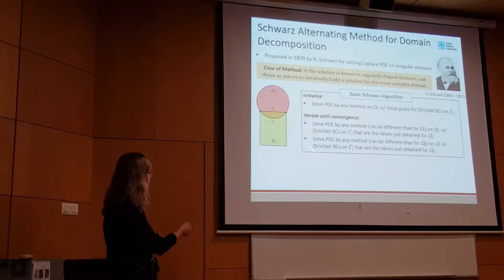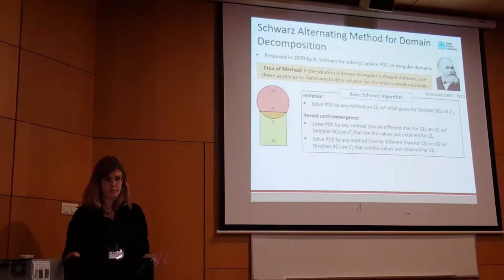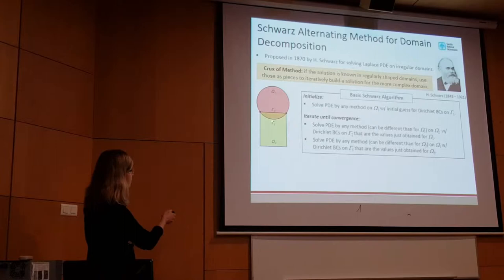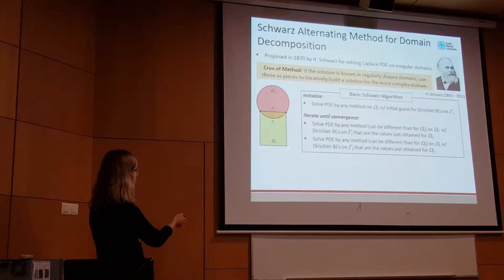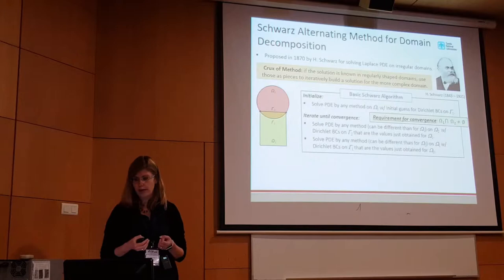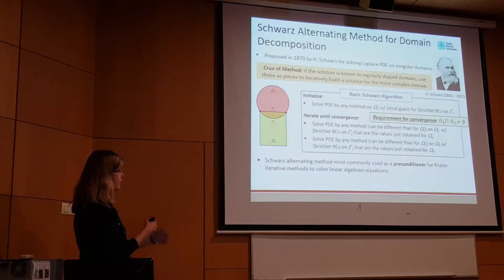I'll describe the algorithm in the context of the canonical picture with two subdomains — it extends to more than two. You first solve your equation on omega-1, using whatever boundary conditions are prescribed on the outer boundary. Then you go to omega-2 and solve there, using boundary conditions on the outer boundary. For the inner boundary gamma-2, you take the solution obtained in omega-1, interpolate it onto gamma-2, and use that to define the boundary condition. You go back to omega-1 and repeat, until the solutions match within the overlap region to a certain tolerance. You need the overlap region to be non-empty to converge.